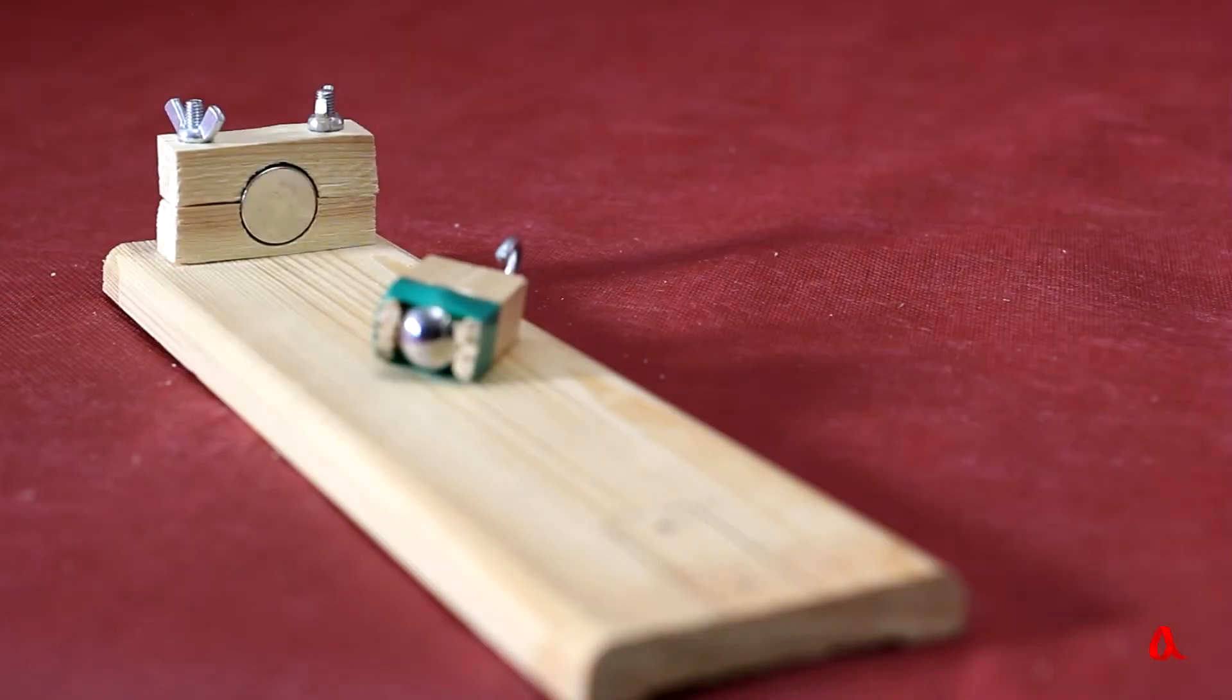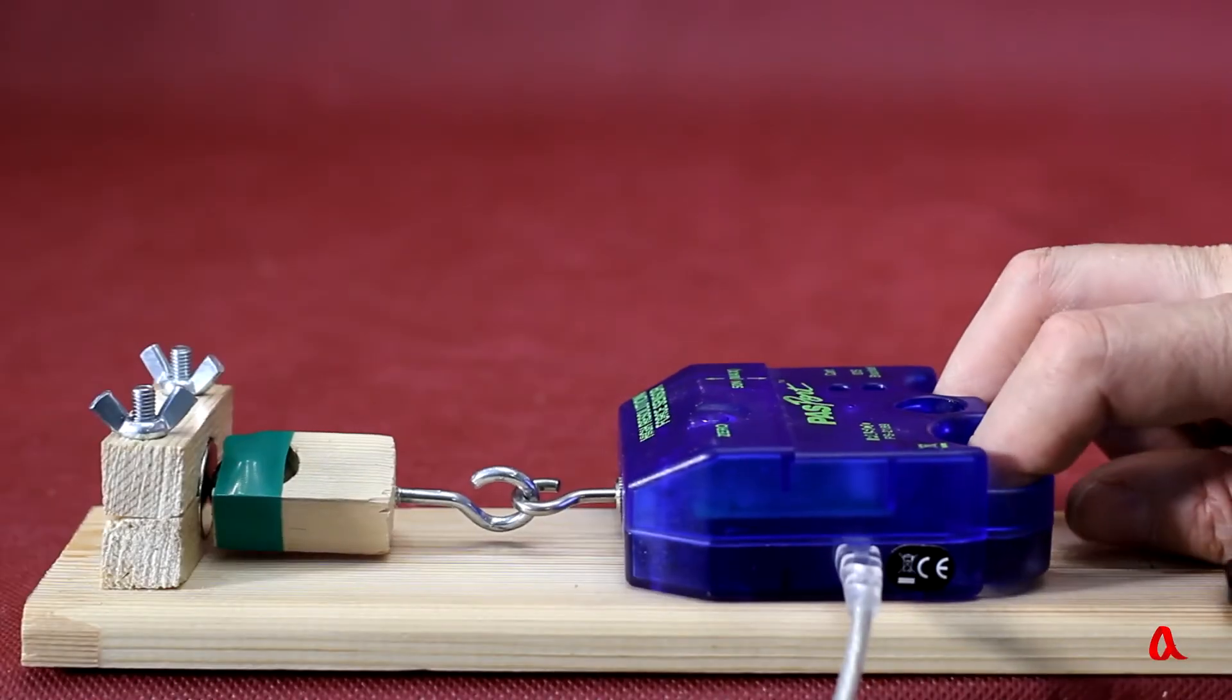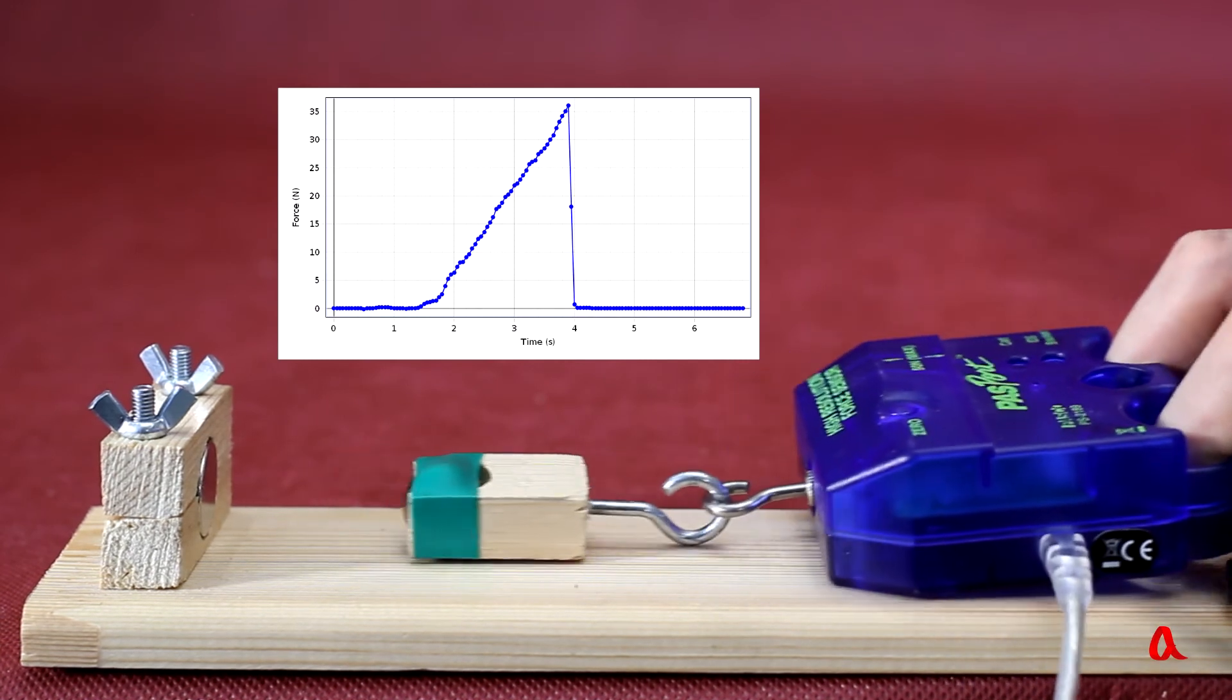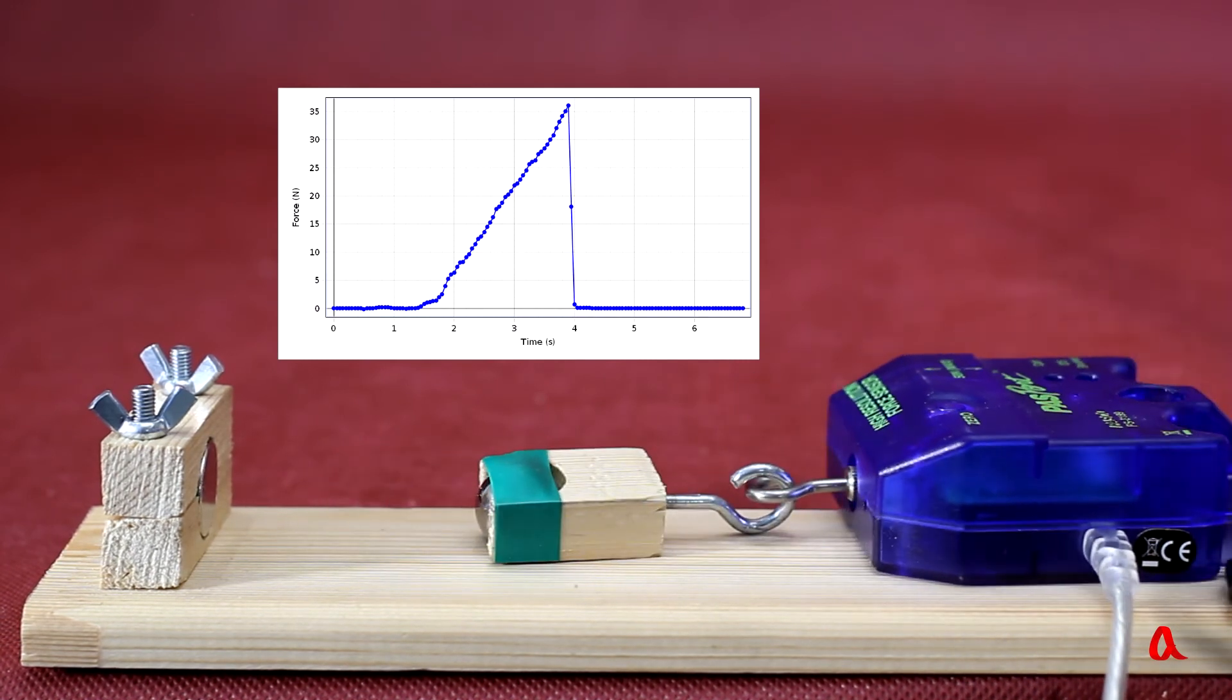To illustrate how quickly the attraction force between the ball and the magnet changes, we have clamped them into wounded mandrels. We pull the mandrel with the ball using a force sensor. The pull-off force is 36 N. It is the value of the force which attracts the ball to the magnet.